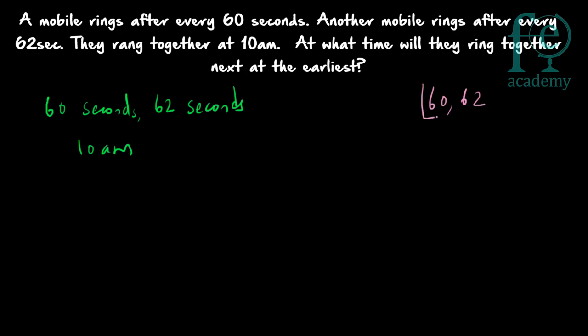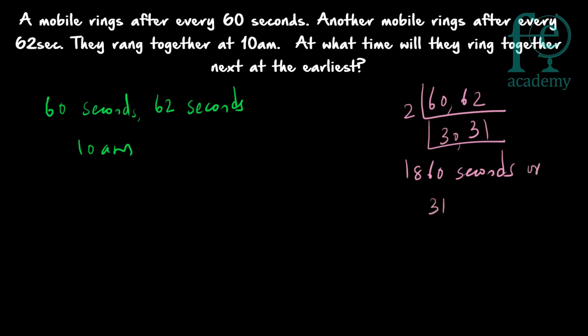The LCM of 60 and 62: dividing by 2 gives 30 and 31. So LCM = 30 × 31 × 2 = 1860 seconds, which equals 31 minutes. These 2 mobiles will ring together every 1860 seconds, i.e., every 31 minutes. They rang together at 10 am, so the next time they ring together is 10 am plus 31 minutes, which gives 10:31 am.